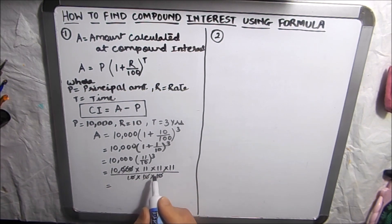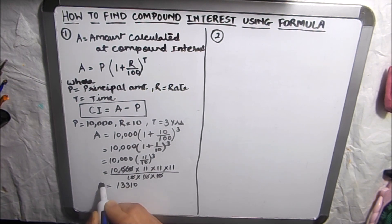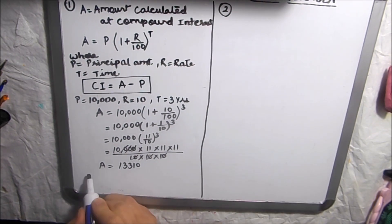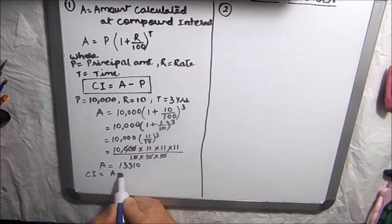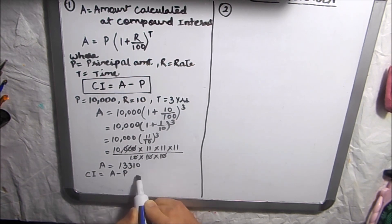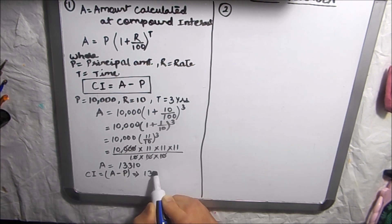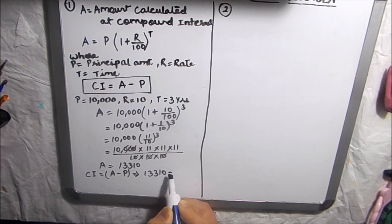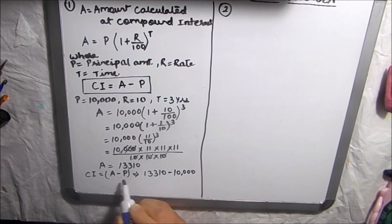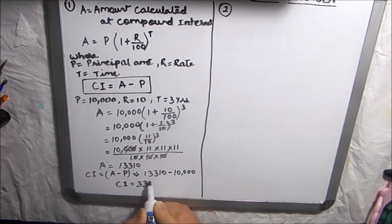11 × 11 × 11 = 1,331, so the amount comes to 13,310. Now to find the compound interest, we use the formula: Amount − Principal = 13,310 − 10,000, so the compound interest is 3,310.